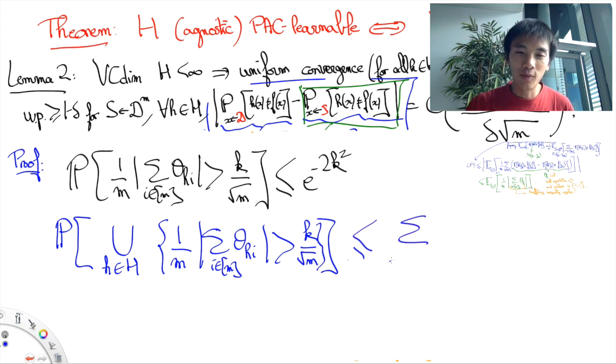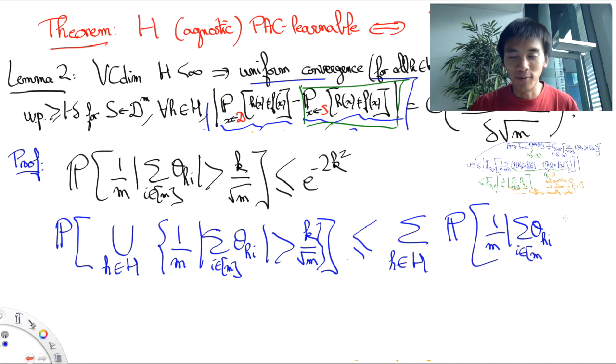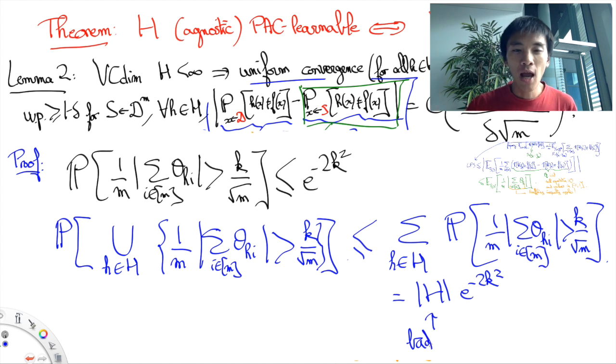Now, if we did it without thinking much, we would get something very bad, because we would have to multiply the right-hand side by the cardinal of H, which could potentially be infinite.